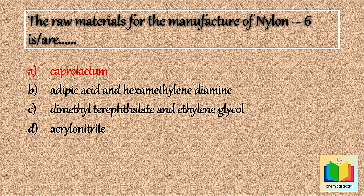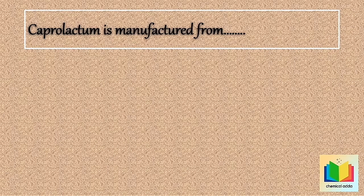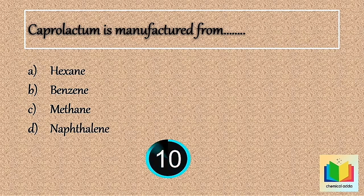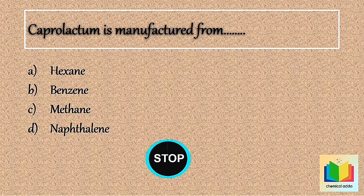Next question: Caprolactam is manufactured from — . Option A: Hexane. Option B: Benzene. Option C: Methane. Option D: Naphthalene. [10 seconds] So the answer is Option A: Hexane.